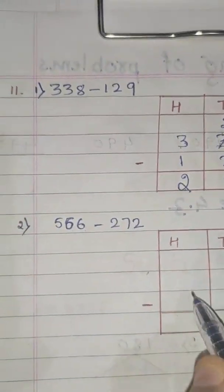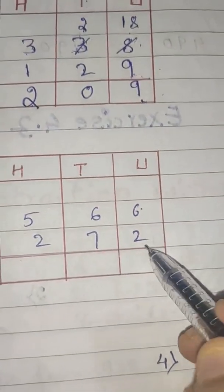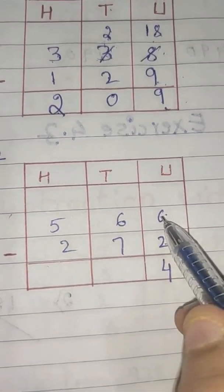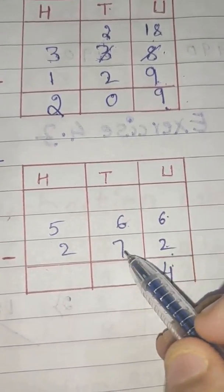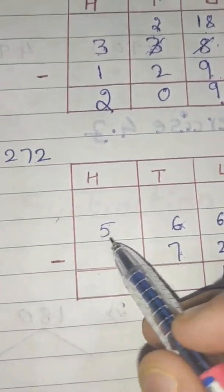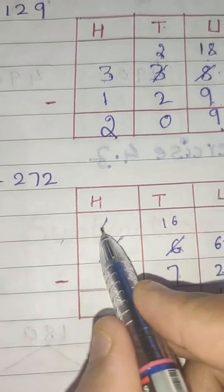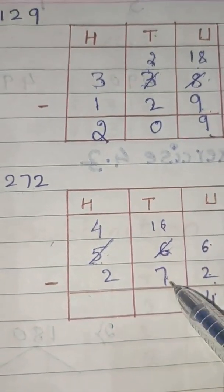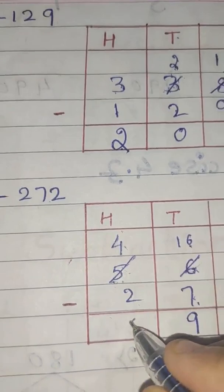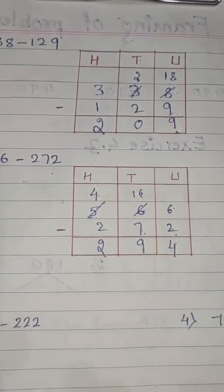Now let us take one more example: 566 minus 272. 6 minus 2 is 4 — you can easily subtract. Come to the tens place: 6 minus 7, you cannot subtract 7 from 6, so borrow 1 from the hundreds place. The 6 becomes 16 and the 5 becomes 4. So 16 minus 7 is 9. Next, 4 minus 2 is 2. The difference between these two numbers is 294.